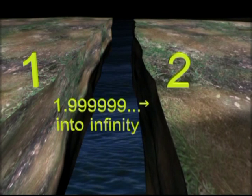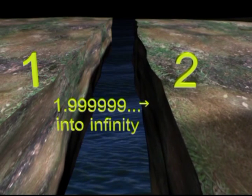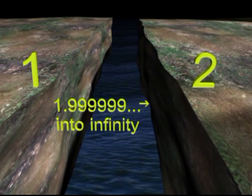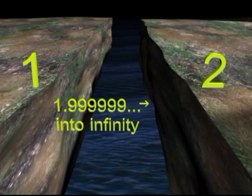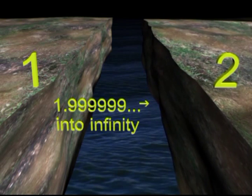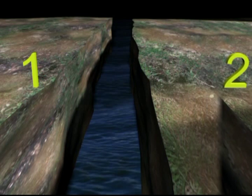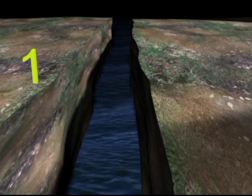But how does one whole number move to the next whole number? I can break the space between each whole number down into infinite parts. For example, between the numbers 1 and 2, I can count 1.99999 adding decimal places into infinity and never reach the number 2. So how does the number 1 magically become the number 2?